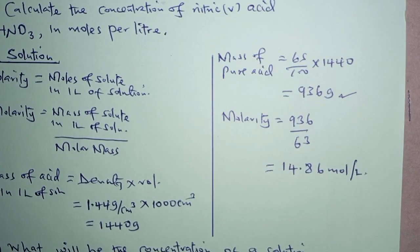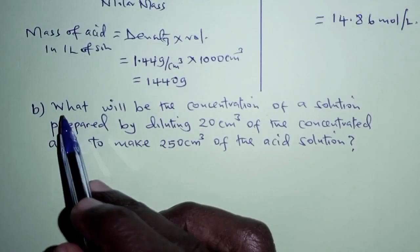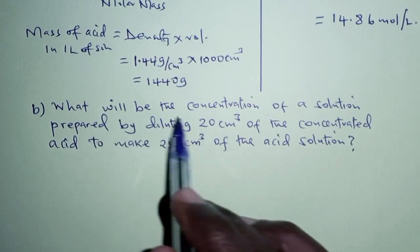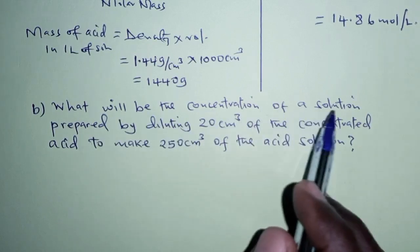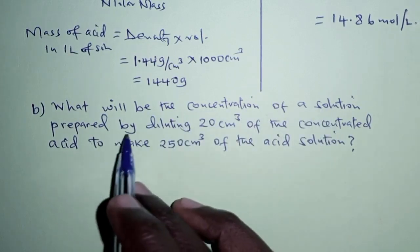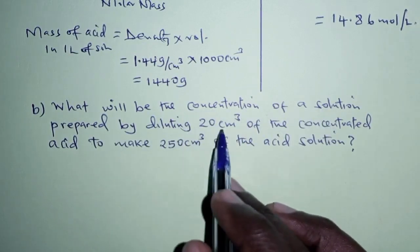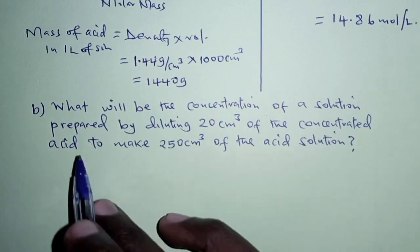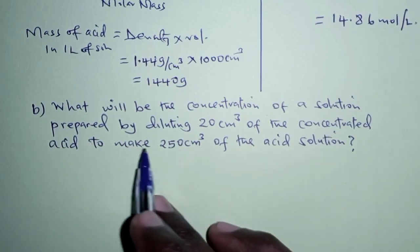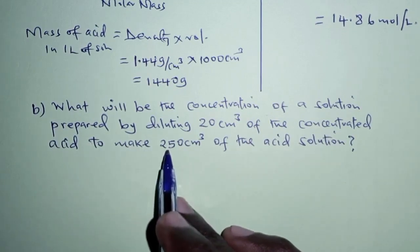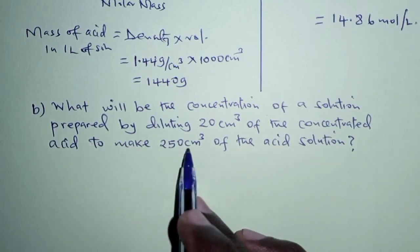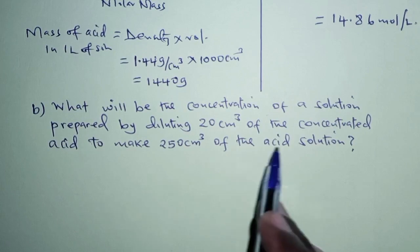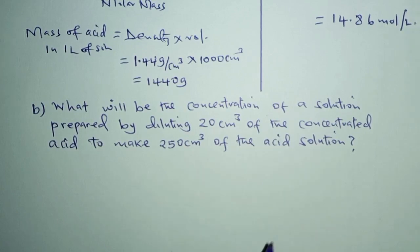This gives us 14.86 moles per liter — that is the answer for part A. For part B: what will be the concentration of a solution prepared by diluting 20 cubic centimeters of the concentrated acid to make 250 cubic centimeters of the acid solution?